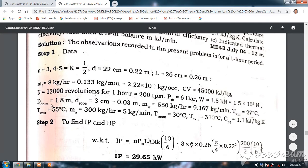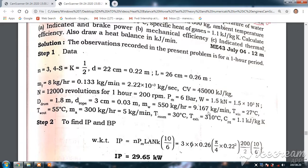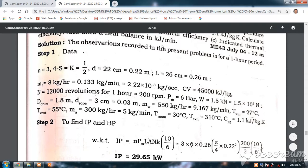Diameter of the brake drum is 1.8 meters. Diameter of the rope is 3 centimeters, that is 0.03 meters. Mass of water is 550 kg per hour, that is 9.167 kg per minute.